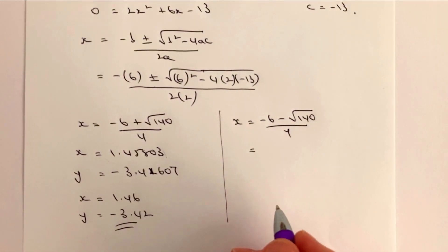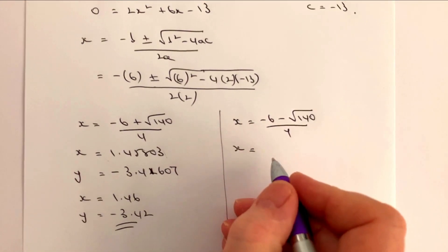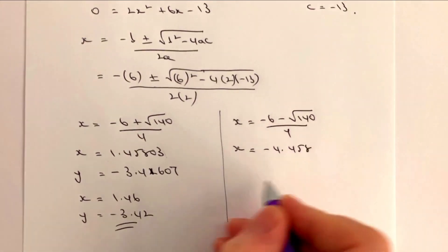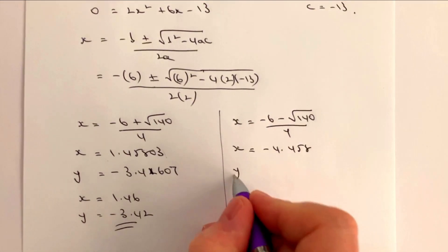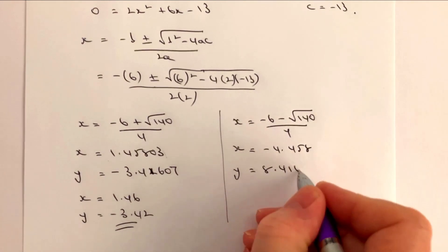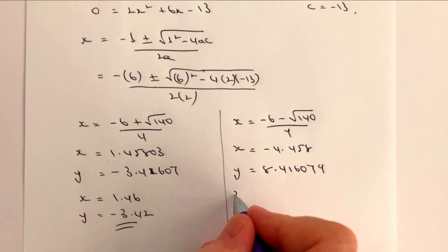Put all that into a calculator, you're going to get that x equals minus 4.458. Okay, and then again substitute for y, and I'm going to get y equals 8.416079.